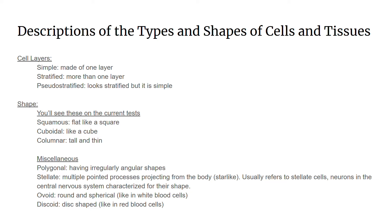Miscellaneous terms — you will not see these a lot in the three body systems mentioned in the current anatomy and physiology rotation. Polygonal means having irregularly angular shapes. Stellate means having multiple pointed processes projecting from the body, making it look somewhat star-like. This usually refers to stellate cells, which are special neurons in the central nervous system characterized for their shape. Ovoid is essentially the stereotypical look of a cell, which is round and spherical. Discoid means disc-shaped.